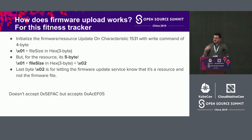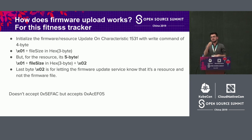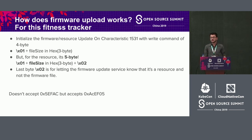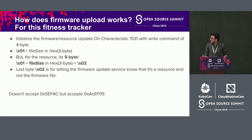For resources versus firmware: firmware controls the hardware and uses a 4-byte initiation packet, while resources — like the phone call image displayed on your fitness tracker — use a 5-byte packet. The extra byte tells the DFU firmware update service 'I'm not sending firmware, I'm sending a resource,' distinguishing between the two upload types.